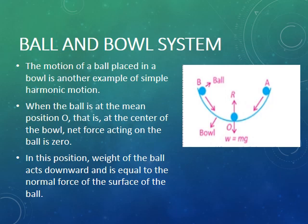When the ball is at the mean position, say position O at the center of the bowl, the net force acting on the ball is zero. Because in this position, weight of the ball acting in the downward direction is equal to the normal force of the surface of the ball acting in the upward direction. So they cancel the effect of each other. That's why the net force acting on point O is zero.